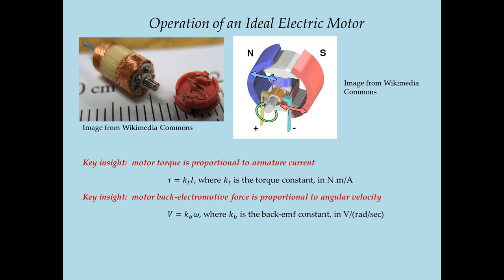The third insight is very interesting: these two constants — the torque constant and the back EMF constant — are equal in an ideal motor. An ideal motor does not dissipate energy; it just converts electrical to mechanical energy. The product of torque and velocity gives mechanical power, and the product of voltage and current gives electrical power, and they must be equal. Substituting torque equals torque constant times current and voltage equals back EMF constant times angular velocity into the power equation, both sides have the product of current and angular velocity, which cancels, revealing that the torque constant and back EMF constant are equal.